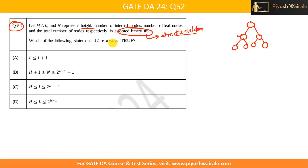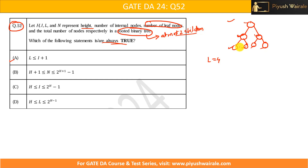Now, which of the following statements are always true? Let us go option-wise. The first one is: l is less than or equal to i plus 1. Here l is the number of leaf nodes, and the condition says number of leaf nodes is less than or equal to internal nodes plus 1. Here l is 4 and i is 3, so 4 is less than or equal to 3 plus 1, which equals 4. This condition is satisfied for this type of complete binary tree.